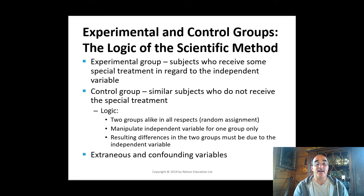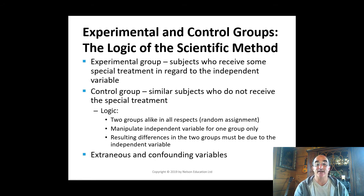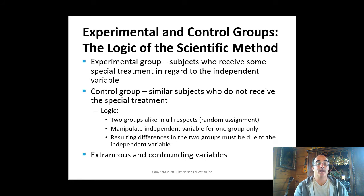In an experiment, the investigator assembles two groups who are as alike as possible: an experimental group who receives a special treatment in regard to the independent variable, and a control group who does not receive the special treatment. If the two groups differ on the dependent variable, it must be due to the treatment. An extraneous variable is a variable other than the independent variable that may influence the dependent variable. Confounding of variables occurs when participants in one group are inadvertently different from another group, and random assignment of subjects is used to control confounding variables.